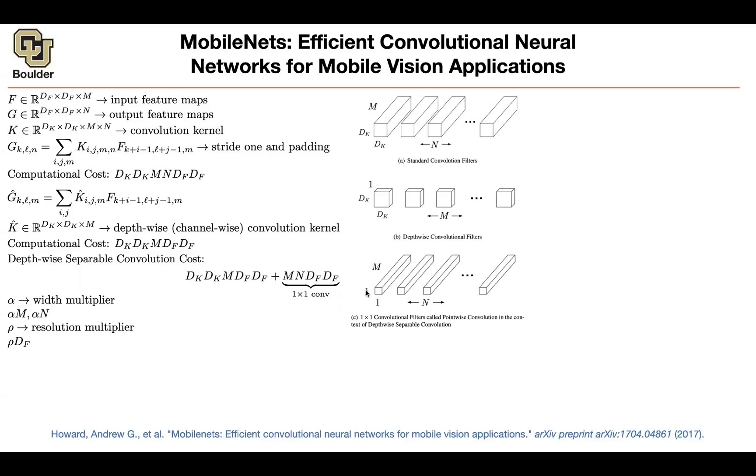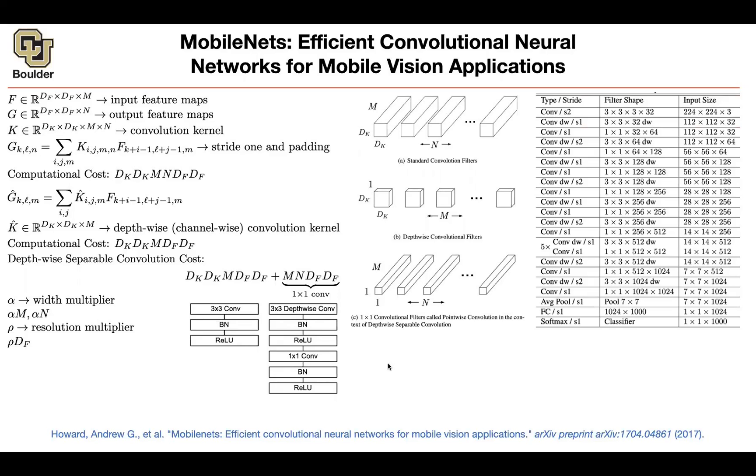So a one-by-one convolution is about doing things pixel-wise, doing your operations pixel-wise. A depth-wise convolution is about doing your operations channel-wise. And wherever you have a three-by-three convolution, batch-norm and RELU, you're going to replace it by three-by-three depth-wise convolution, batch-norm, RELU, and a one-by-one convolution after it. That was the microstructure of our network.